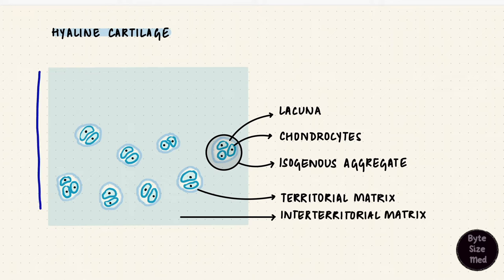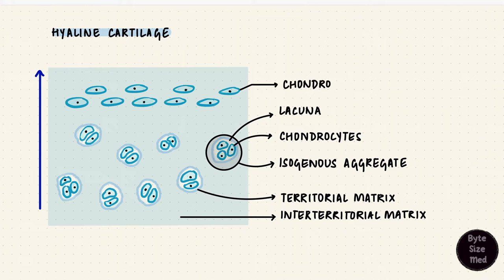This differentiation of cells happens from the center outwards. So the center has the chondrocytes in their lacunae with the extracellular matrix. But towards the periphery, we have the more ellipsoid chondroblasts. And remember the chondroblasts are the ones that form the chondrocytes, the matrix, and everything else that we saw just now.